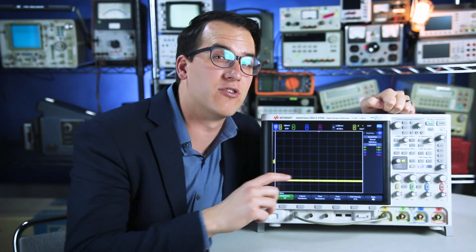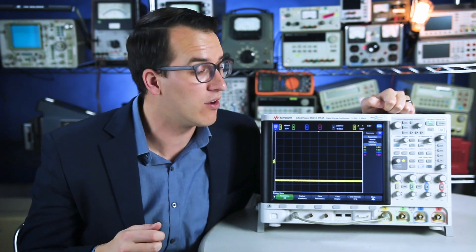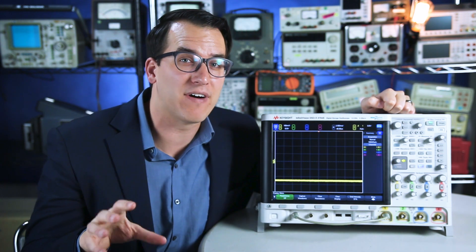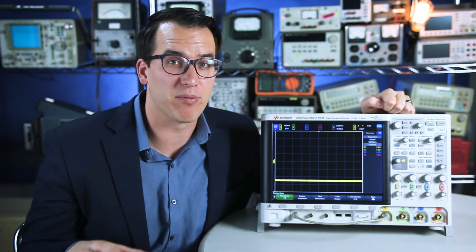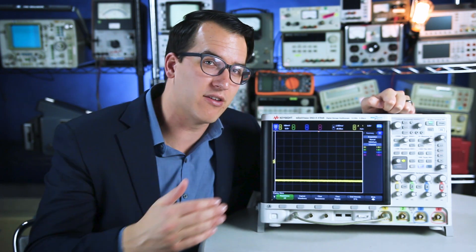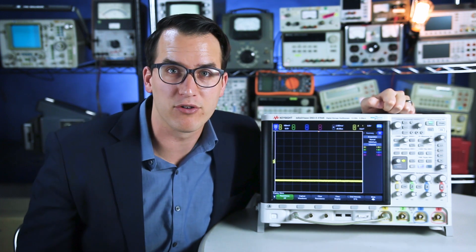So I have channel 1 hooked up to my function generator and I have it producing a 1 Hertz pulse, so you may see that flashing on the screen about once per second. Now why is that signal not right in the center of the screen where I expect my scope to be triggering?